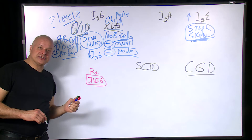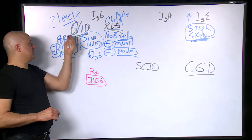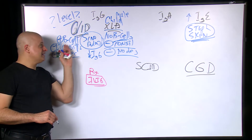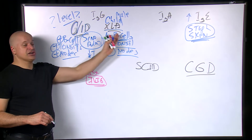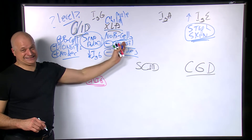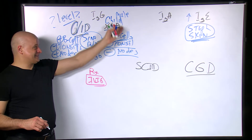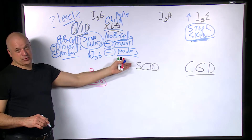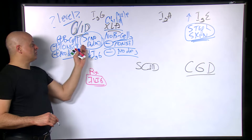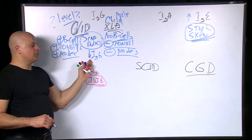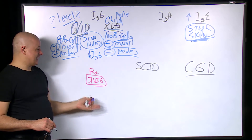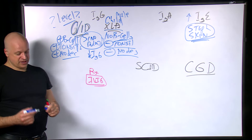Is there a difference between having erectile dysfunction and having no penis? Common variable has the equipment but doesn't make anything. Recurrent sinopulmonary infections are the same for both of them.